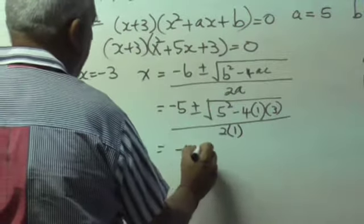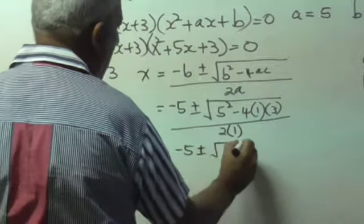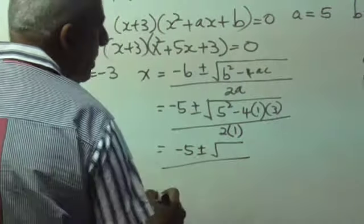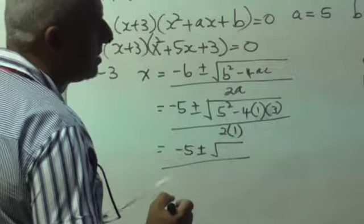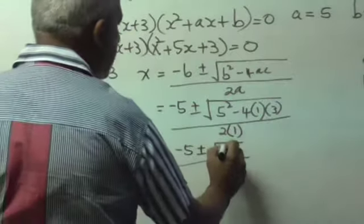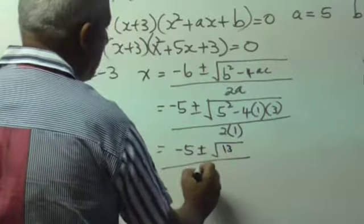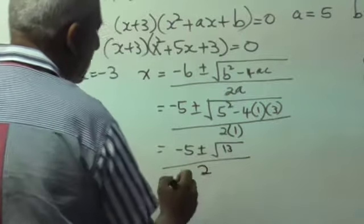And that becomes minus 5 plus minus the square root of, well, we've already worked out what this is. This is 13. So, this is 13 all over 2. And then, you find the two answers.